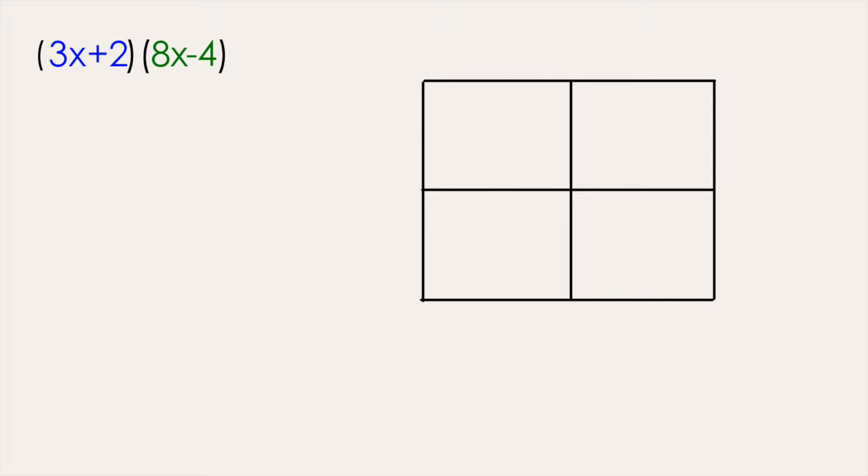to separate each binomial, starting with separating 3x and the positive 2. Then along the left side of the square, we're going to separate our 8x minus 4 binomial.